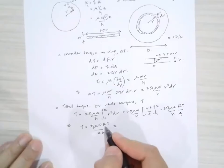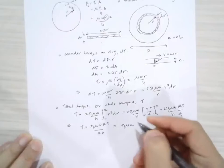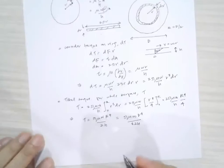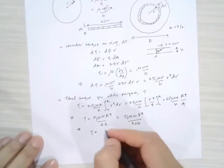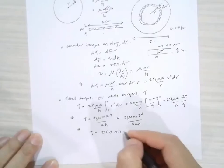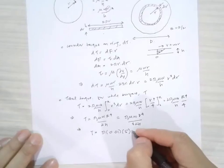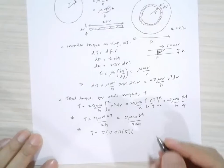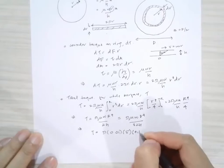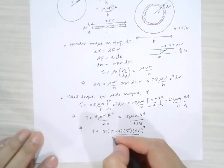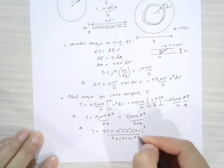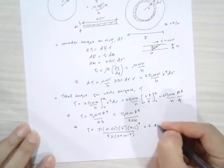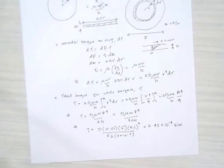Expressing in terms of diameter d, where R equals d over 2, the torque becomes T equals pi mu omega d to the fourth power divided by 32h. Substituting values — mu equals 0.01, omega equals 5 radians per second, d equals 0.1 meters, and h equals 2 times ten to the minus three meters — gives T equal to 2.45 times ten to the minus four newton meters.